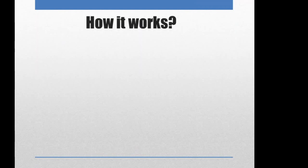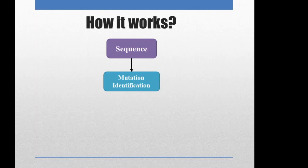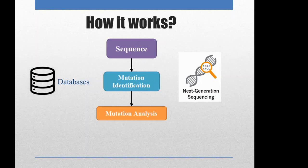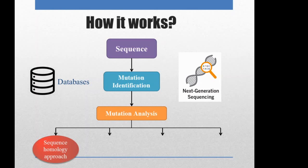So how does mutational analysis actually work? Initially you have a sequence, and then we identify the various mutations which can be present in that sequence. Mutation identification can be done using specific databases already available, like dbSNP — a database for single nucleotide polymorphisms — or using a high-throughput bioinformatics technique called next-generation sequencing. After mutations have been identified, the next step is mutational analysis.